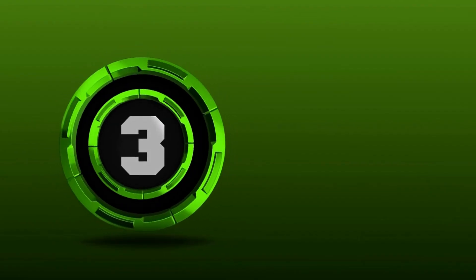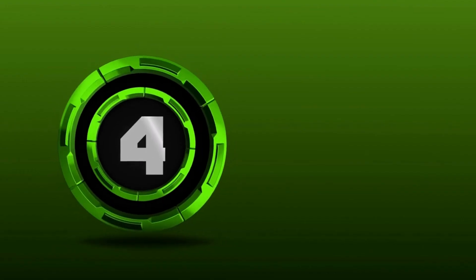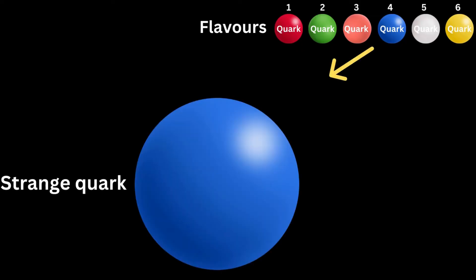Number three: charm quark, denoted c, is heavier than the up and down quarks and has a charge of plus two thirds. Number four: strange quarks, these are heavier than up and down quarks and have a charge of minus one third.